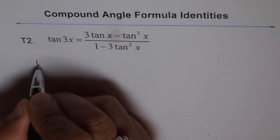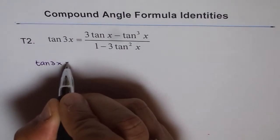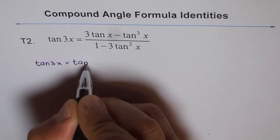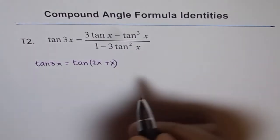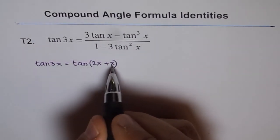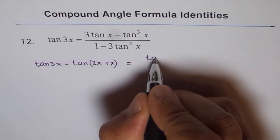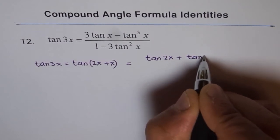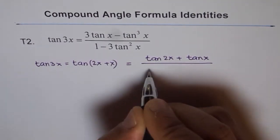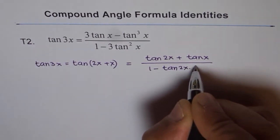We can write tan 3x equals to tan of 2x plus x. Now we can use the tan a plus b formula and expand this. So we get tan 2x plus tan x divided by 1 minus tan 2x tan x.